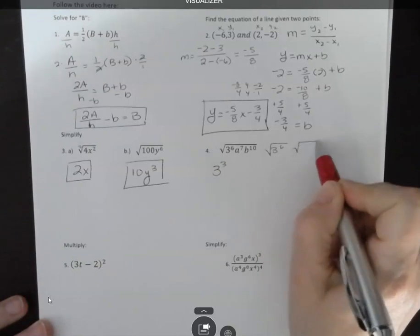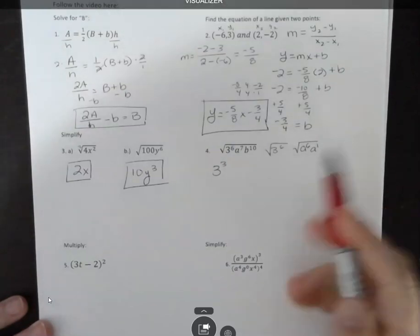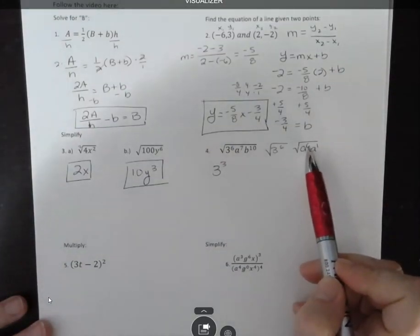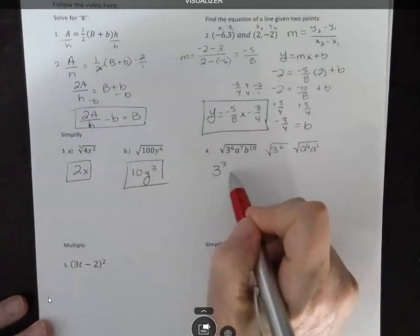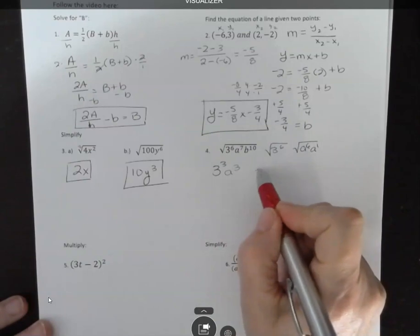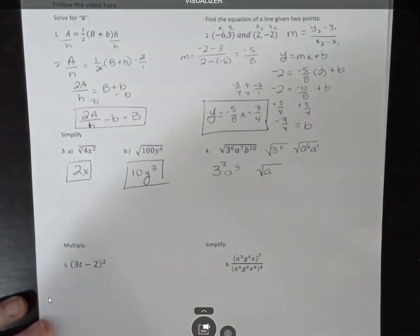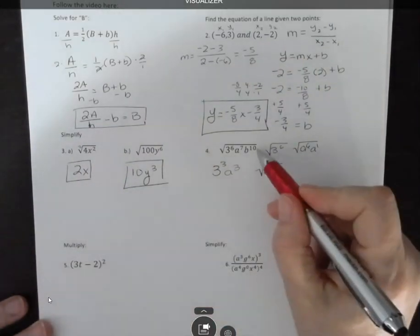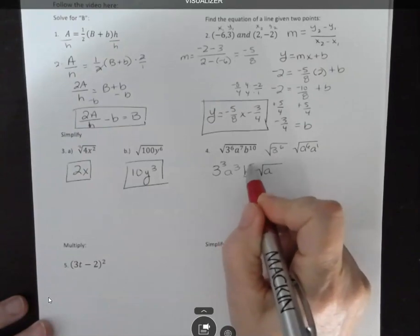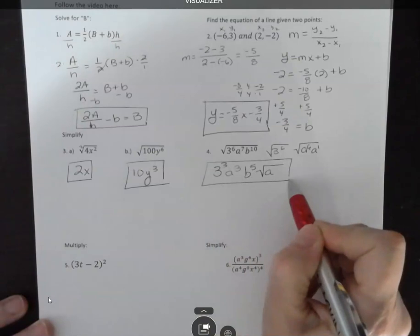If I was thinking about a to the seventh, I would think about a to the sixth and a to the first, because 6 plus 1 is 7, and I know I can take out a 6 because 2 goes into 6 evenly. So that brings out a to the third. But I cannot take out that single a, so that would still be under the radical. Then I would think about b to the tenth. Well, 2 goes into 10 evenly, so that's b to the fifth. So I end up having this expression after I simplify.